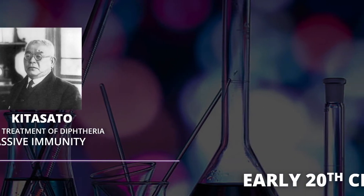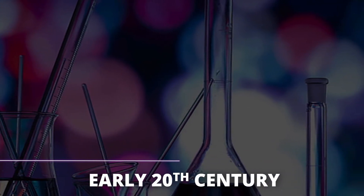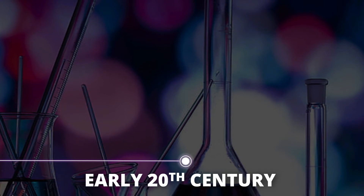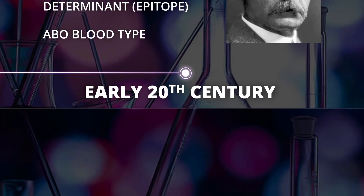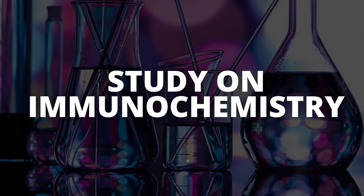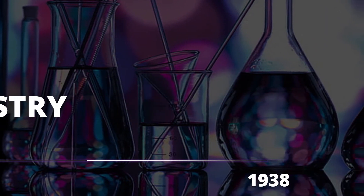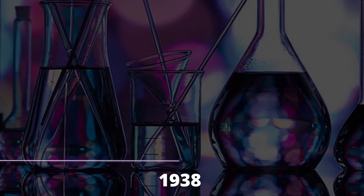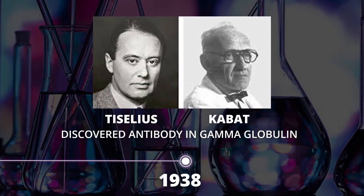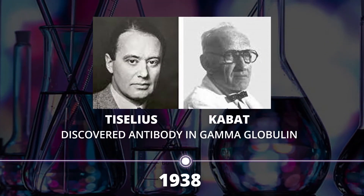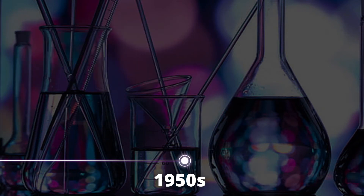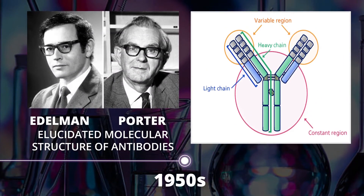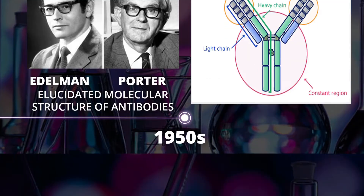In the early 20th century, Karl Landsteiner conducted a study on antigenic determinants and discovered the ABO blood groups. In 1938, Tiselius and Cabot discovered antibodies in gamma globulin. In the 1950s of the 20th century, Porter and Edelman elucidated the molecular structure of antibodies.